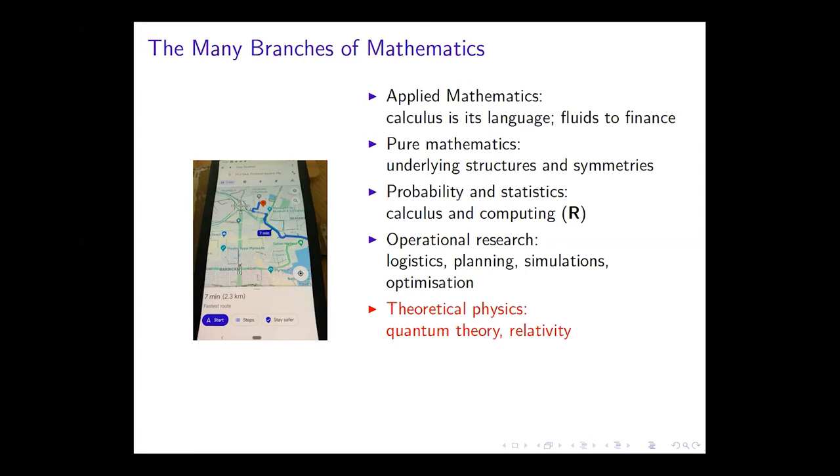A mobile phone, like all computers, is a quantum device, but the mapping applications connect to the GPS system and GPS relies upon relativity - not just Einstein's special theory of relativity but also his theory of gravity, the general theory of relativity.